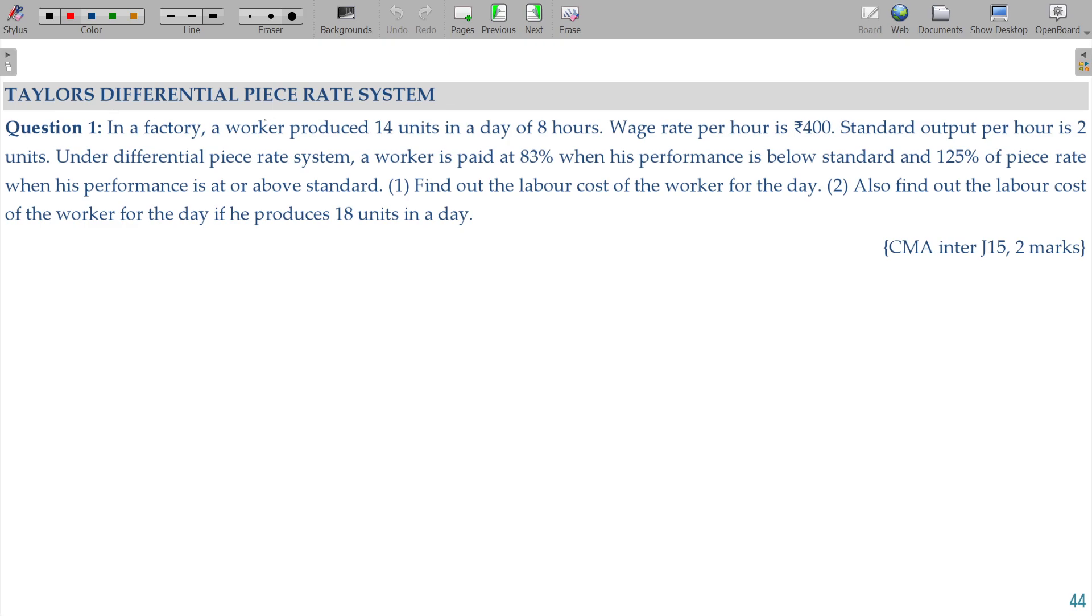Taylor's Differential Piece Rate System, CMA Inter Lecture, 2 marks in the question. In a factory, a worker produced 14 units in a day of 8 hours. The wage rate per hour is 400.